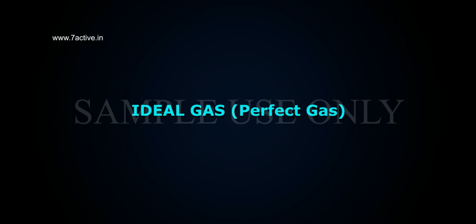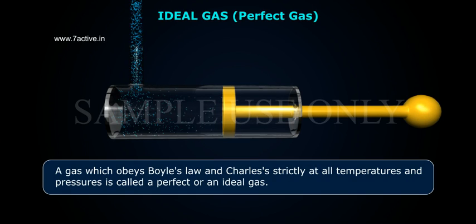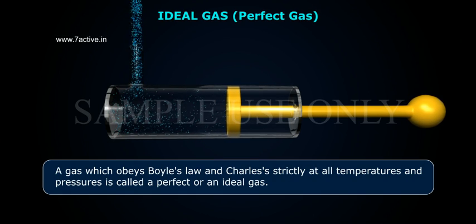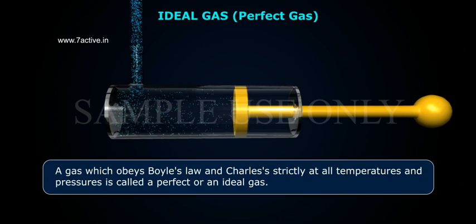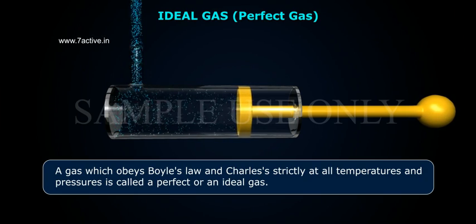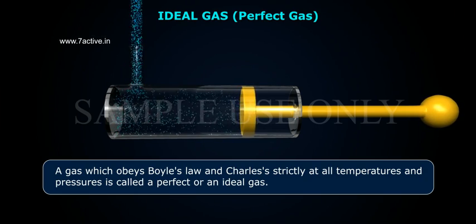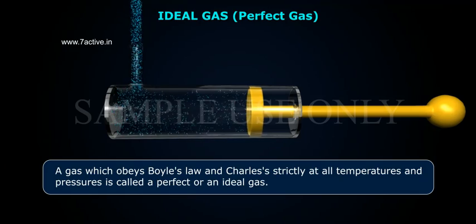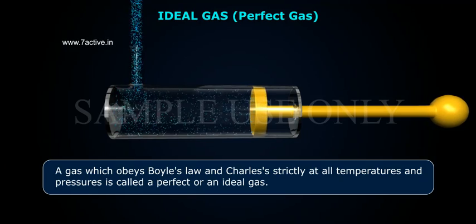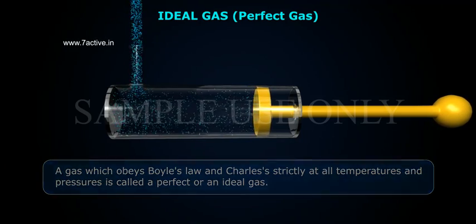Ideal gas, perfect gas. A gas which obeys Boyle's law and Charles's law strictly at all temperatures and pressures is called a perfect or an ideal gas.